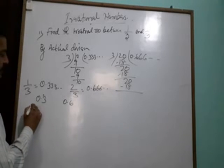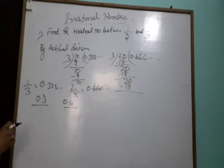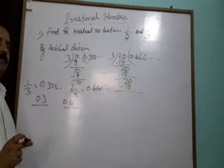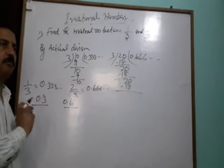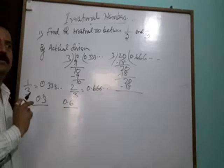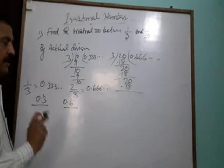Between 0.3 repeating and 0.6 repeating, we insert any number, but one thing to remember: we cannot write in repeating form. You must write in non-repeating form.